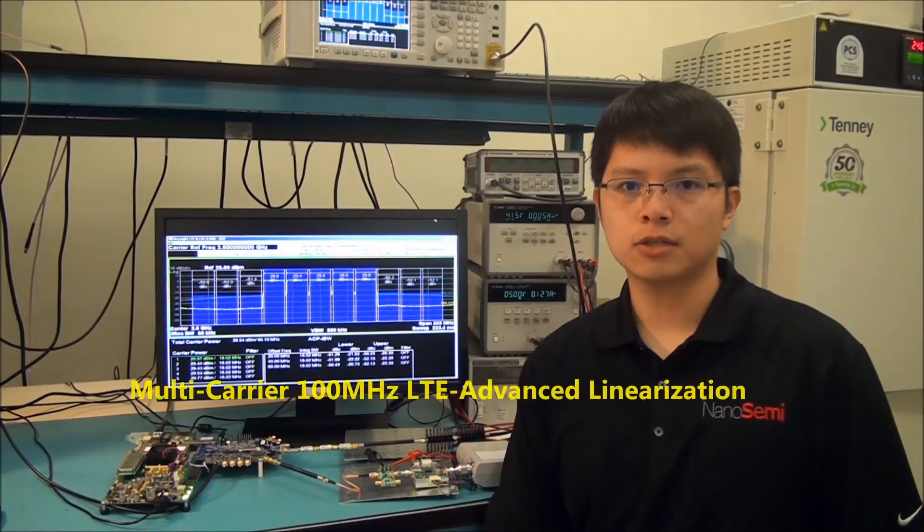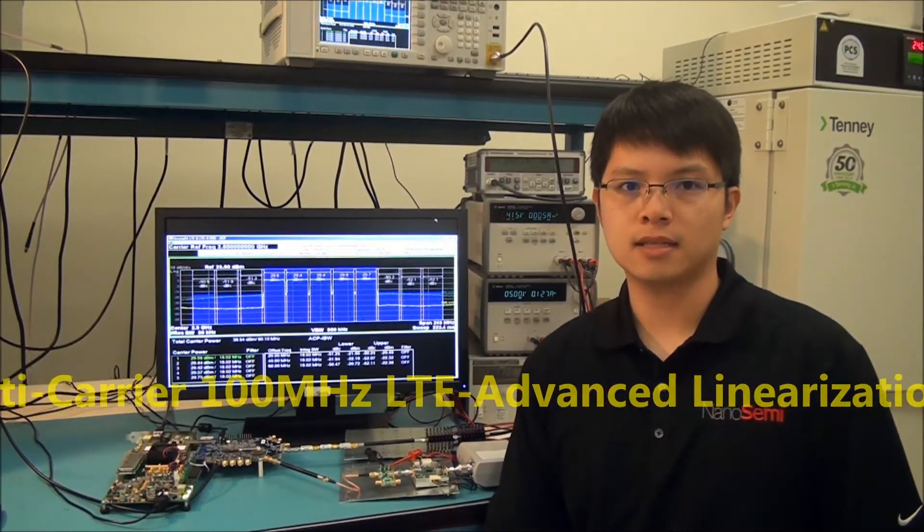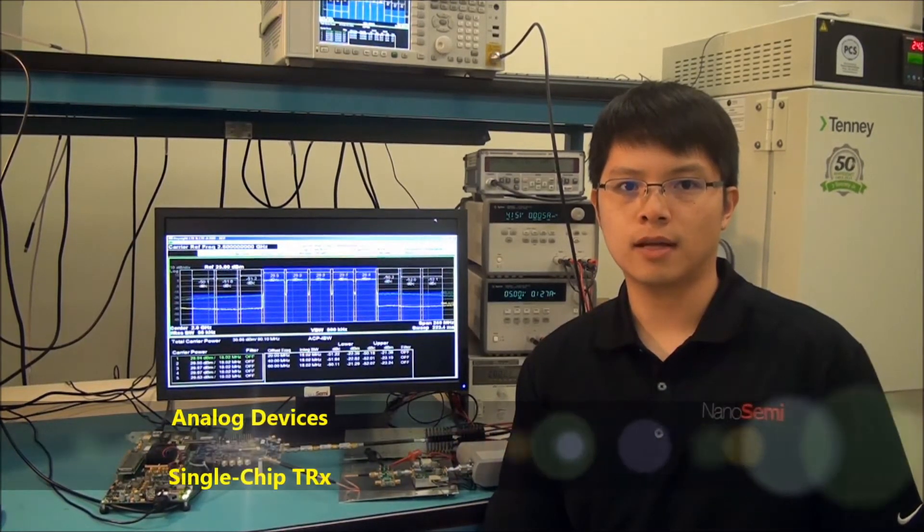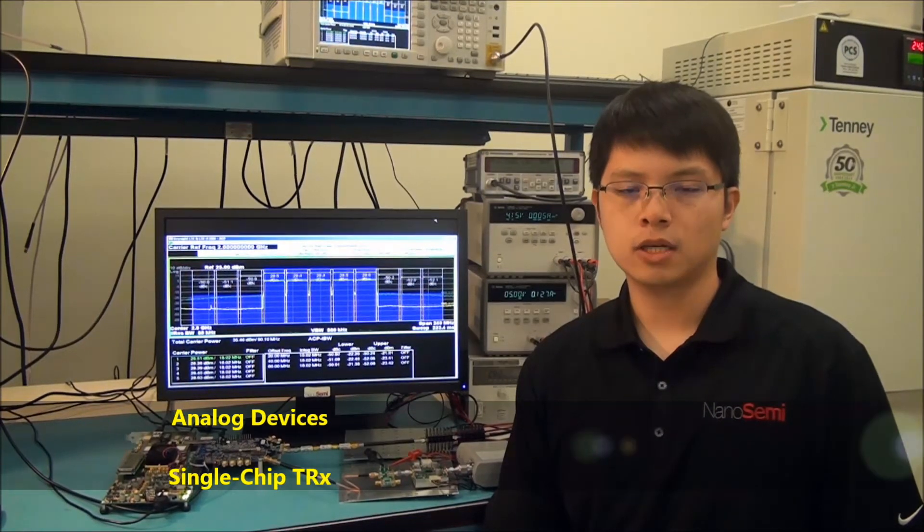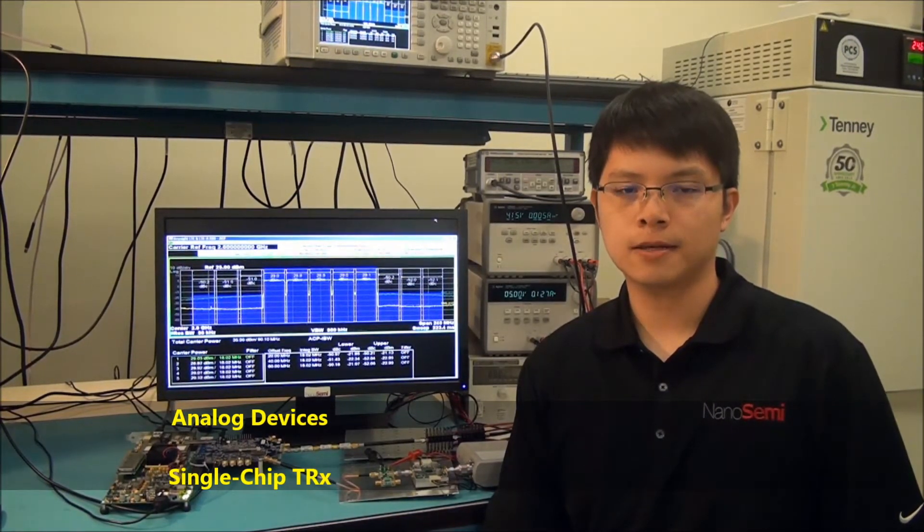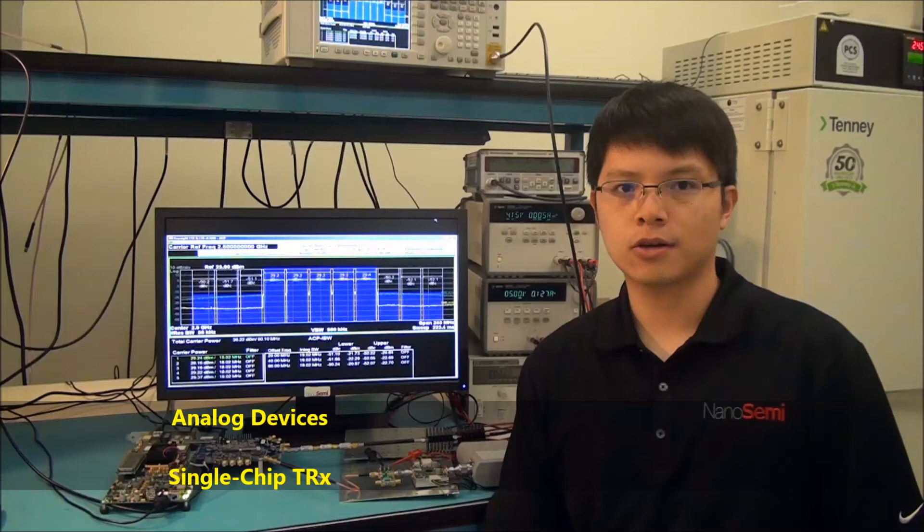The demo features multi-carrier 100 MHz LTE advanced linearization. The test bench consists of a highly integrated RF CMOS transceiver from Analog Devices which includes dual channel transmitter and 240 MHz bandwidth observation receiver.